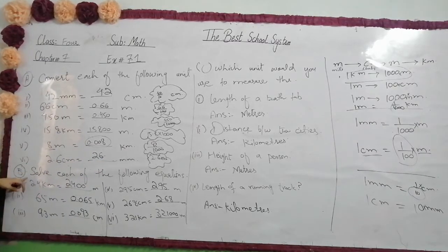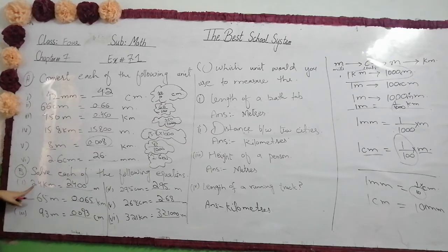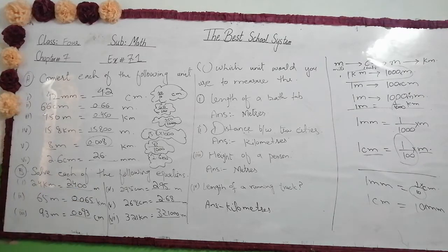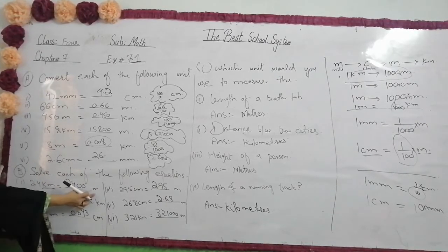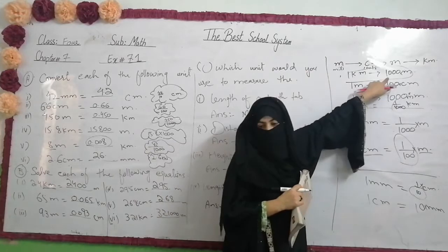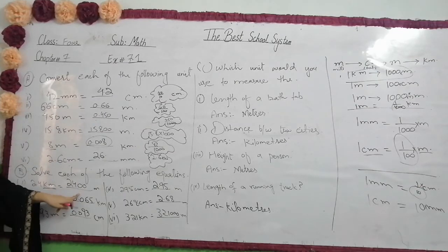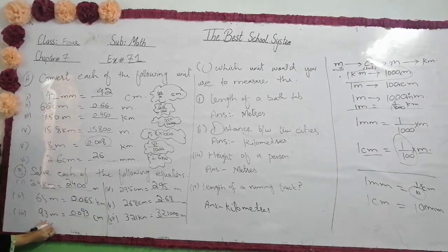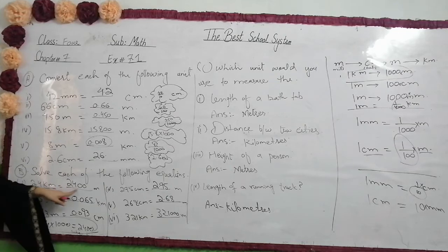Question number 7.1: solve each of the following. We have 2.4 km and you will convert it into meters. When you convert to meters, you multiply by 1,000. So 2.4 x 1,000 gives you the answer. I have it written directly — clear?